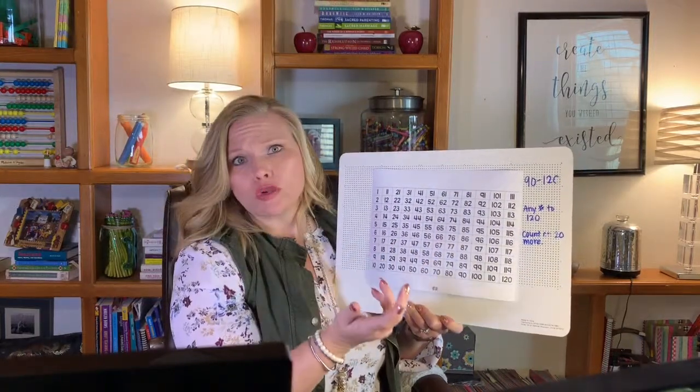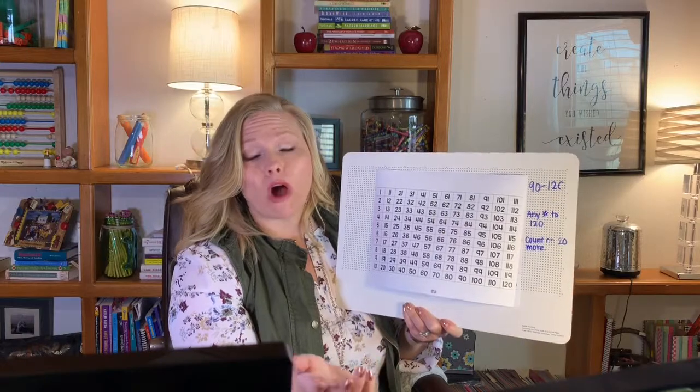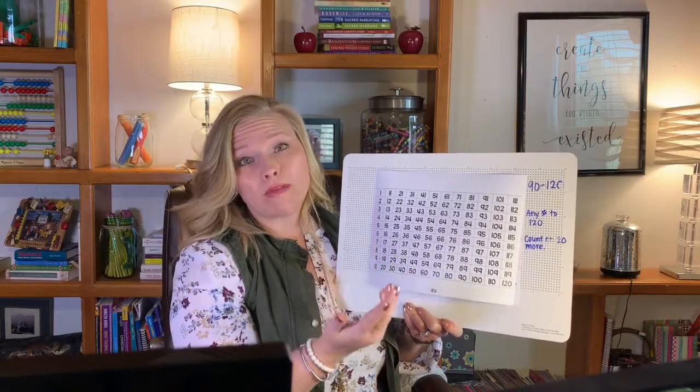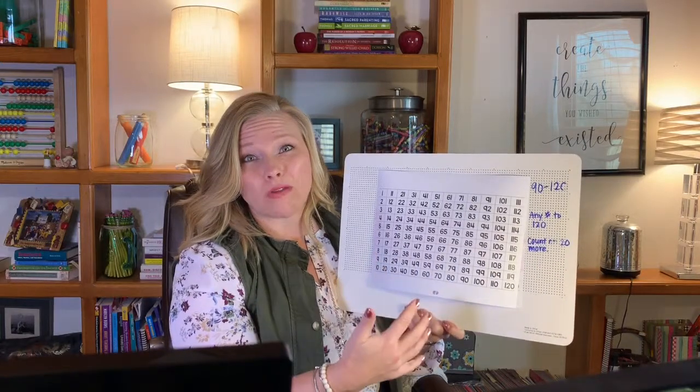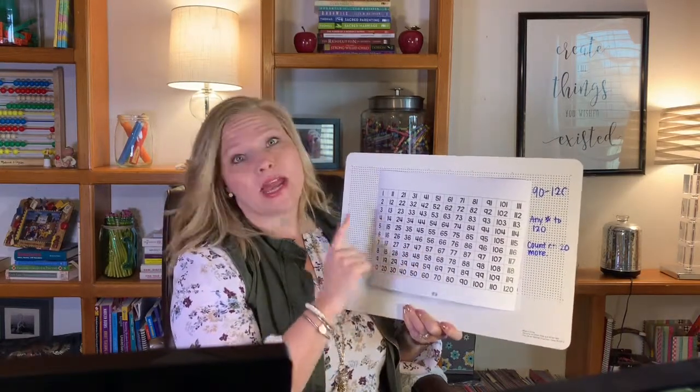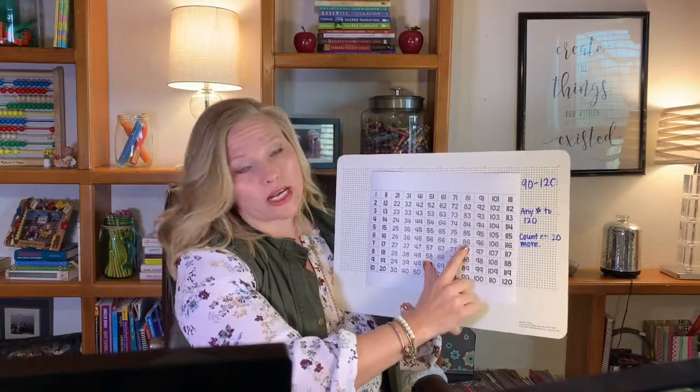If we say, friends, what comes after 24? And they have to count all the way back from one or maybe even all the way back from 20, 21, 22, and they have to count on from 20, then they don't have that number order. So we're helping them get number order here.